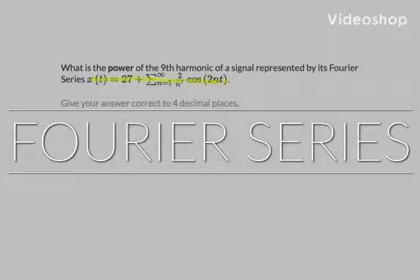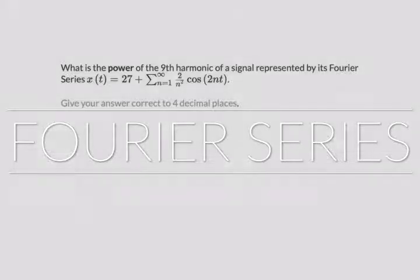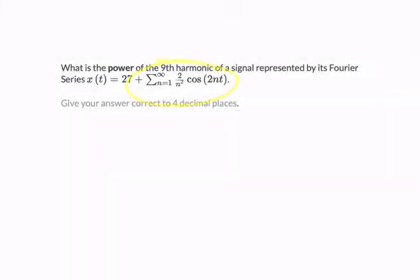In this question, we're given some signal x of t, and it's represented using its Fourier coefficients, and we're asked for the power of the ninth harmonic.